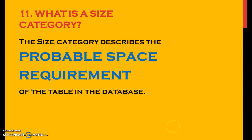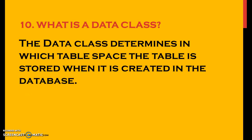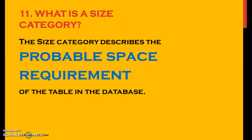So what is size category? Just below the data class we'll also have something called size category. The size category describes the probable space requirement of the table in the database. For example if you give it as 0 to 6000, the system assumes that you have somewhere around 0 to 6000 records which need to be saved in this particular database table, and the system is going to allocate that much memory space for your database table.